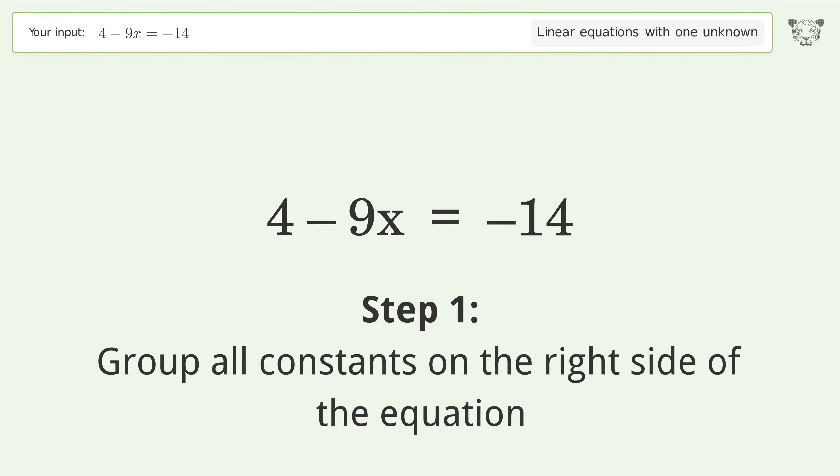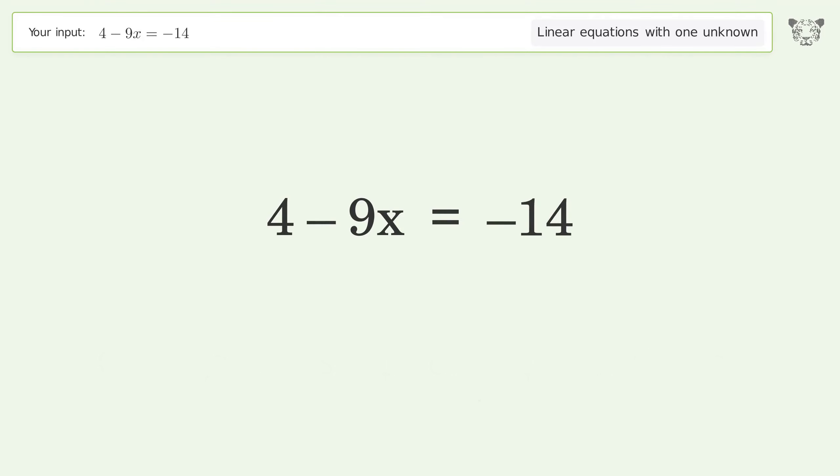Group all constants on the right side of the equation. Subtract 4 from both sides. Group like terms. Simplify the arithmetic.